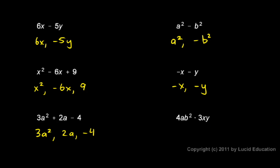In this last one, 4ab squared times 3xy, there's one term in that expression. This is one thing multiplied by another. That makes all of these pieces combined into a single term. The single term is 4ab squared times 3xy.